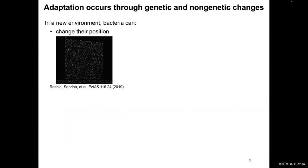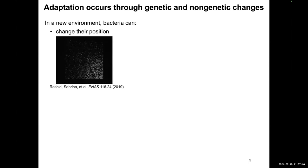I want to start by talking about adaptation in bacteria. When you put bacteria in a different environment, they can react differently. One example most of us are familiar with is chemotaxis. In this movie, there is a chemoattractant in the lower right side of this chamber, and you can see that all the cells can swim towards the chemoattractant.